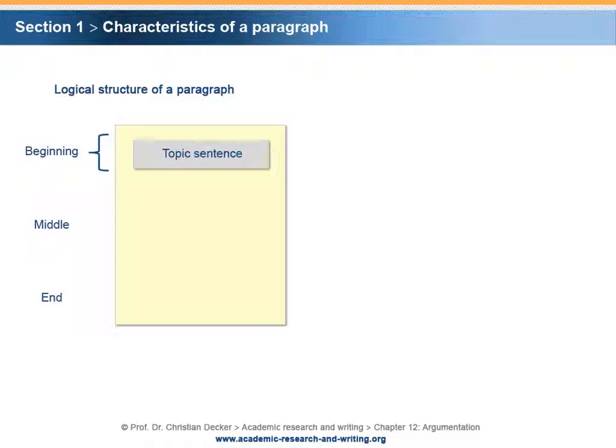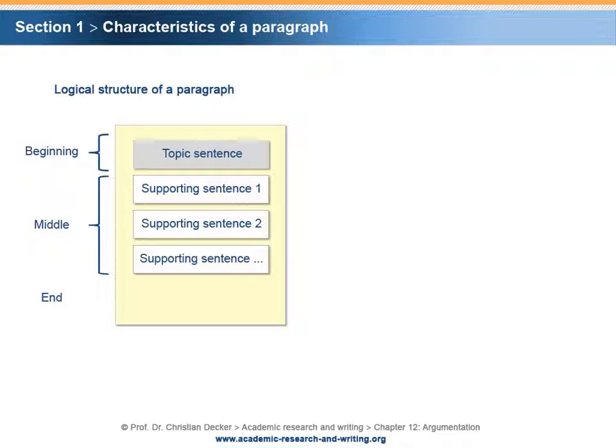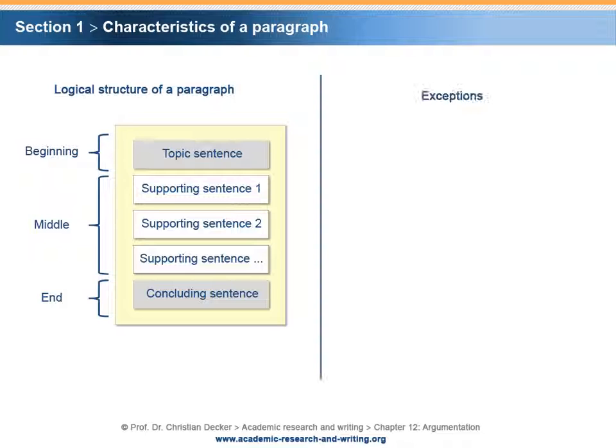The three categories of sentences within a paragraph are: beginning — topic sentence; middle — supporting sentences; and end — concluding sentence. With few exceptions, a paragraph typically consists of at least three or more sentences.